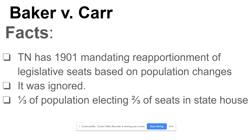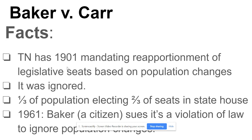This created a huge imbalance. One third of the population of Tennessee was electing two-thirds of the seats in the state House of Representatives — wildly disproportional. Rural people were getting to elect most of the seats in the state legislature, while city residents had far less representation. In some cases, rural counties with 10,000 people had a representative, while Memphis with half a million people also got just one — completely unfair.